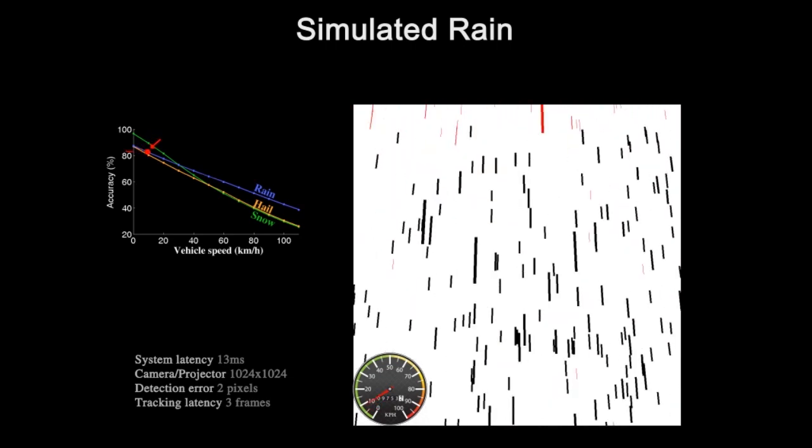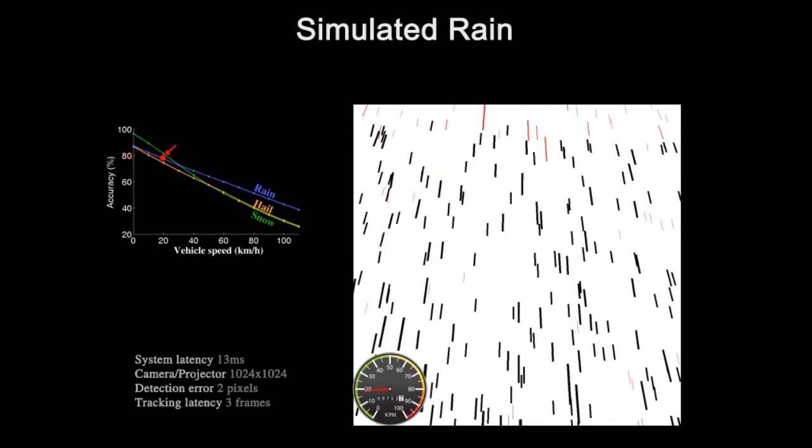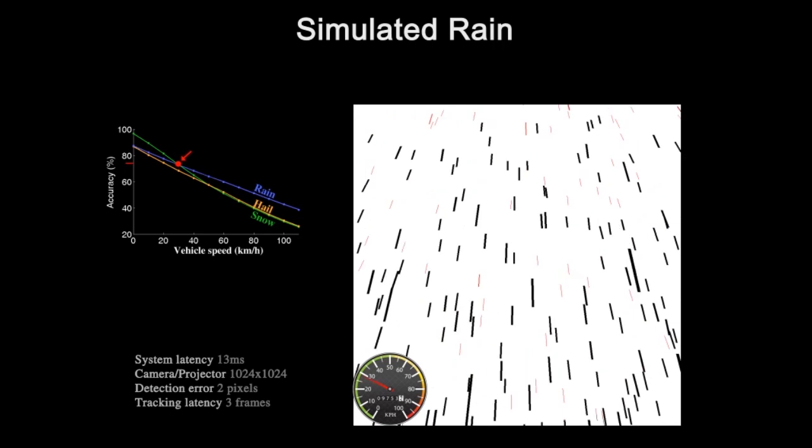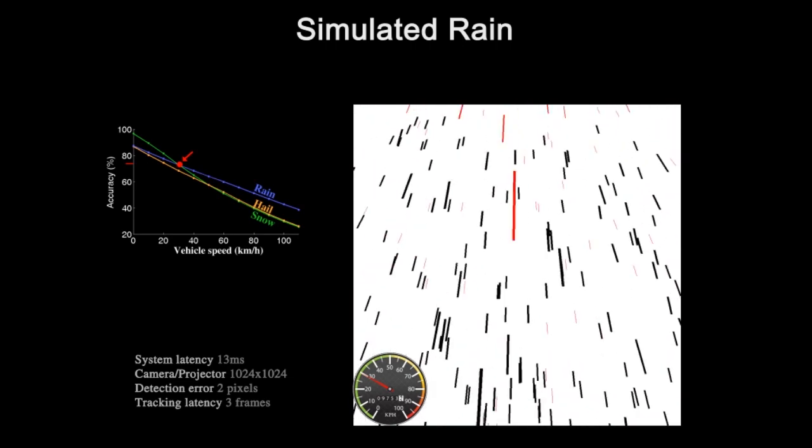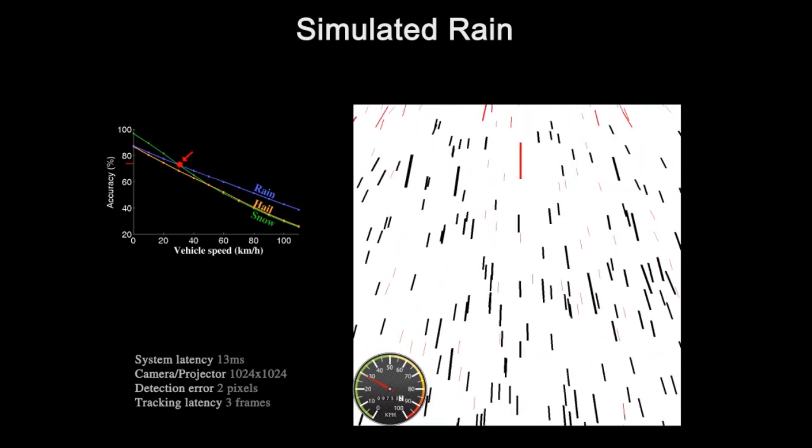If we add forward velocity, the drops enter the field of view from the top and the sides, which makes the task challenging, though not impossible. At 30 km per hour, the accuracy is 73%.